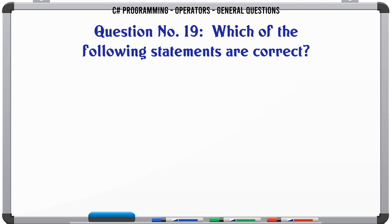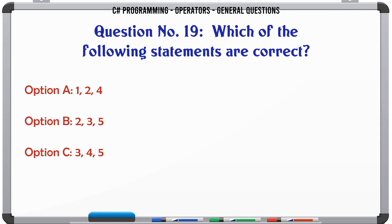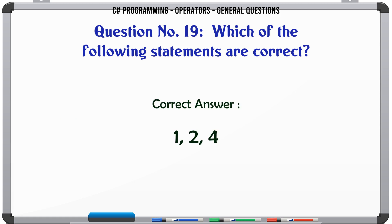Which of the following statements are correct? A: 1, 2, 4. B: 2, 3, 5. C: 3, 4, 5. D: 1, 3, 5. The correct answer is 1, 2, 4.